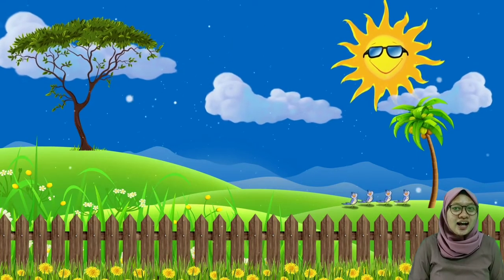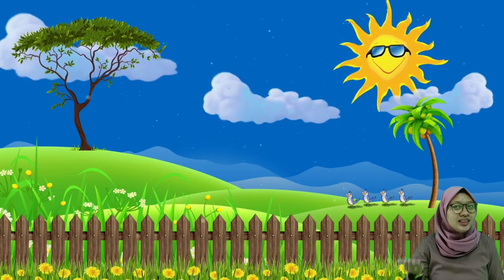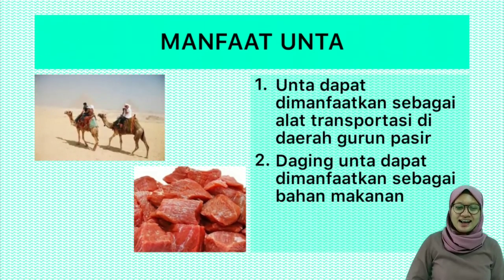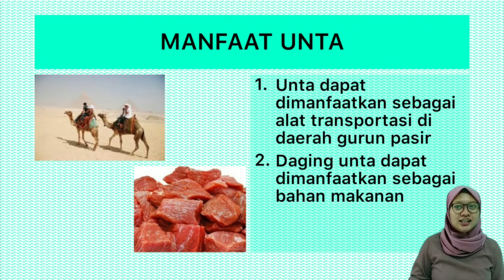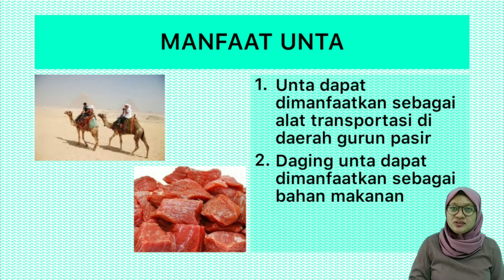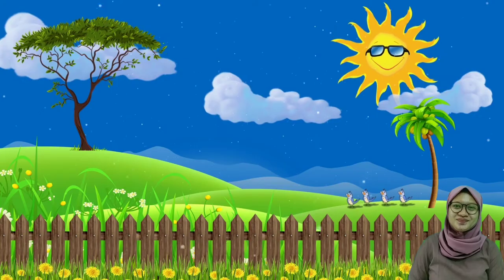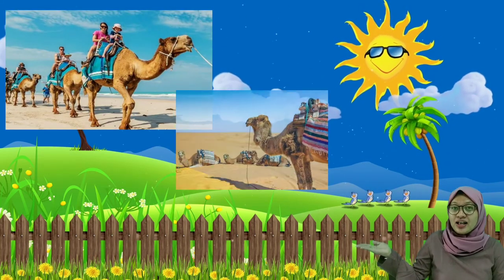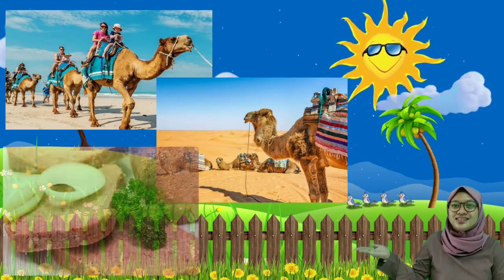Dan hewan yang akan kita bahas terakhir adalah unta. Manfaat unta yang pertama adalah unta dapat digunakan sebagai alat transportasi, terutama di daerah gurun. Manfaat yang kedua, daging unta juga dapat dikonsumsi sebagai bahan makanan. Berikut adalah gambar unta yang dimanfaatkan dalam kehidupan sehari-hari.